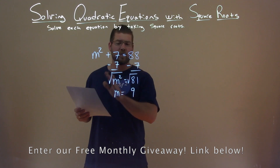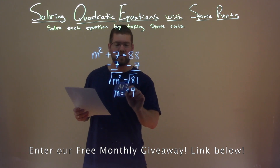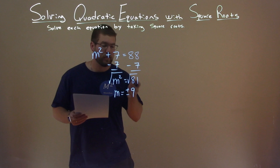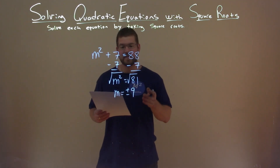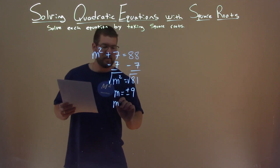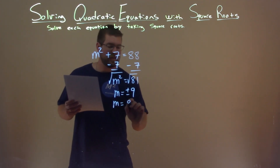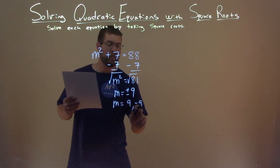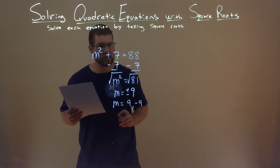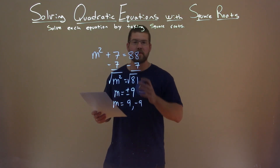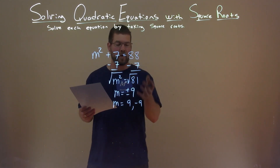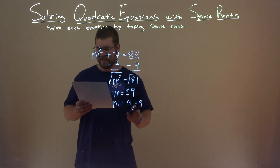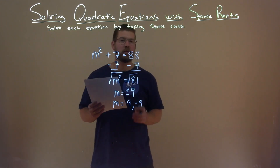The square root of 81 is 9. Since we're taking the square root over the equal sign, that's plus and minus. So m equals plus or minus 9 — we can write it as positive 9 and negative 9. Both of those, plugged into our original equation, would make it true. Final answer: m is 9 and negative 9.